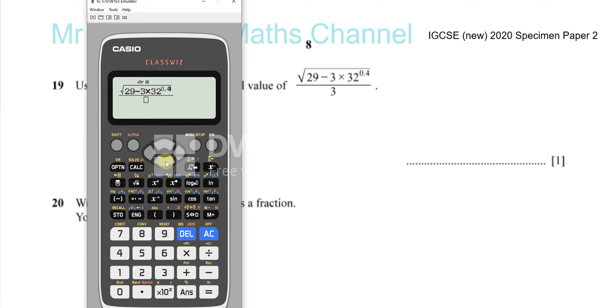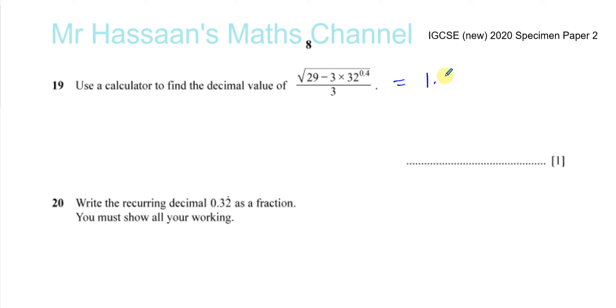And divided by 3. You just type exactly as it looks in the calculator and press equals, and it gives you 1.37436. It's 1.374 to 3 significant figures.